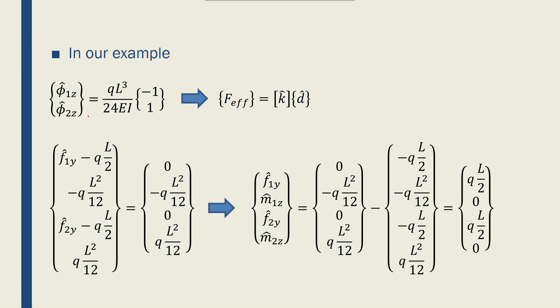This is what I will end up with. First, I found the phi1z and phi2z to be equal to this equation. So phi1z is minus QL cubed over 24EI and phi2z is QL cubed over 24EI.